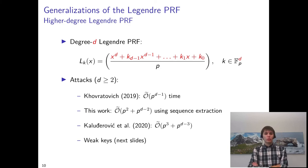So in particular, it's possible to use a similar attack as the basic approach by Khovratović to obtain an attack in p to the d minus 1 time, given p queries.